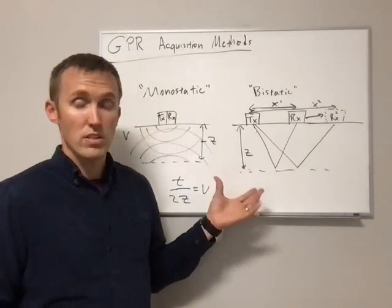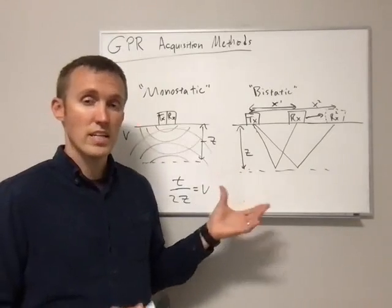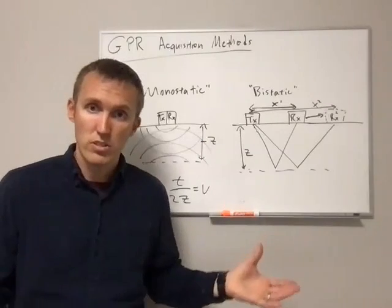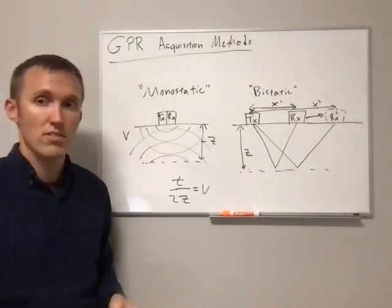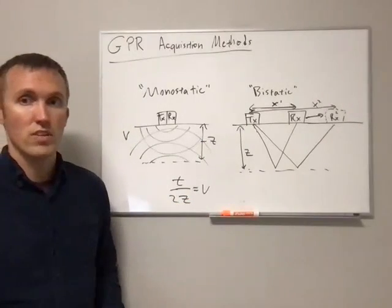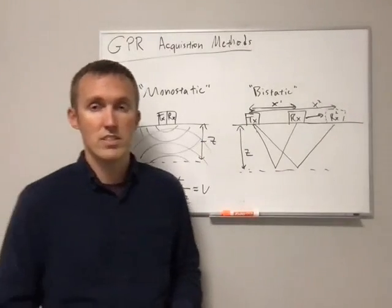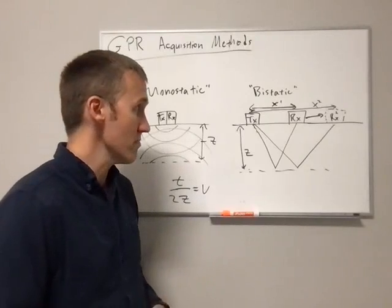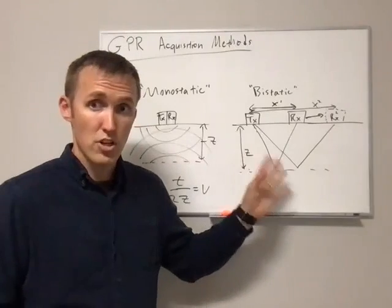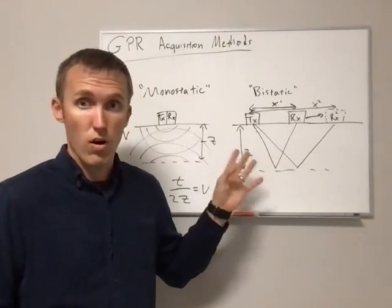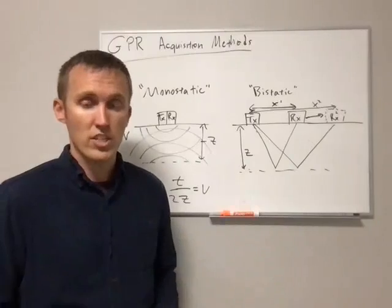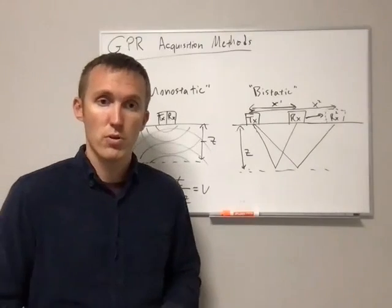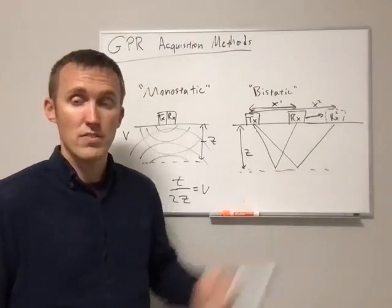By doing this we can get an estimate of the depth to our layer interface, and that combined with the two-way travel time gives us information on the velocity of this layer. That's why we want this greater flexibility. WAR — Wide Angle Reflection and Refraction — is one type of acquisition mode we can do with a transmitting and receiving antenna.